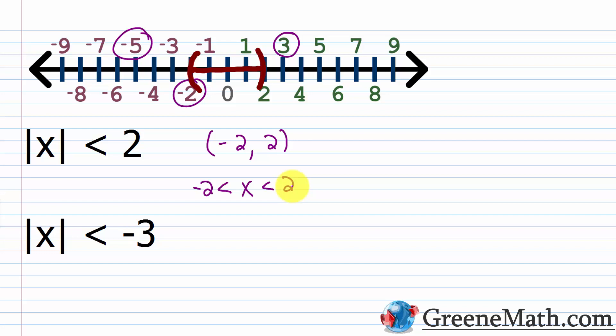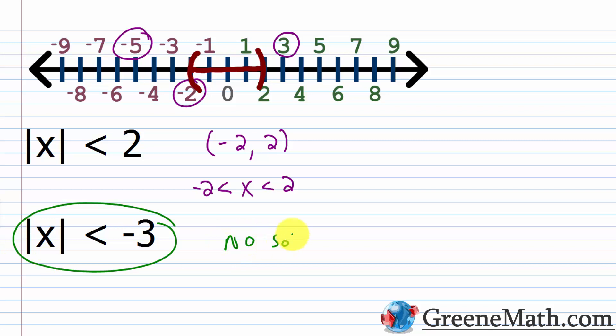Let's think about another trick one: the absolute value of x is less than negative 3. You would see that there's no solution here. X represents a number whose absolute value is less than negative 3 — but can absolute value be negative? No. It has to be either zero, if you're plugging in zero, or positive. If you plug in a negative, you get a positive. If you plug in a positive, you get a positive. So there's no way that the absolute value of something can be less than negative 3. It's not possible — it has to be zero or larger. So there's no solution. You can write 'no solution' or use the empty set symbol.